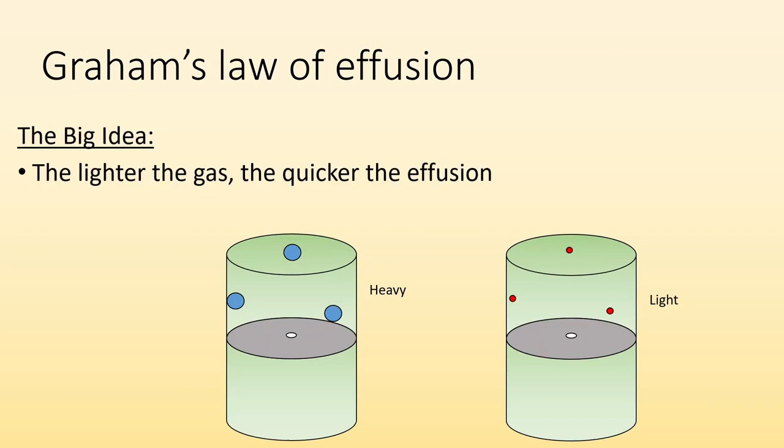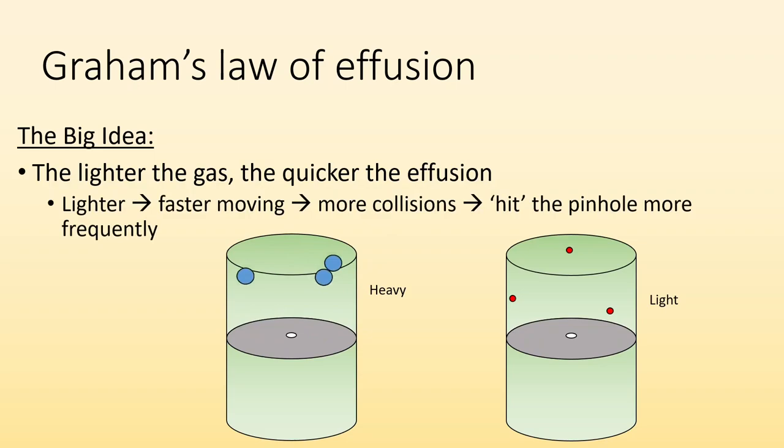All right so Graham's law of effusion. The big idea is the lighter the gas is, the quicker it's going to effuse. If it's lighter it's faster moving which means it has more collisions which means it's more likely to hit the pinhole more frequently. Right so on the left we have some heavy molecules moving relatively slow. On the right we have faster moving molecules. On the right we have faster molecules which means they're going to collide more often which means they're more likely to hit the pinhole in a certain amount of time. All right so if we take a look at their relative rates of effusion you can see the light ones on the right are effusing a lot quicker than the ones on the left.